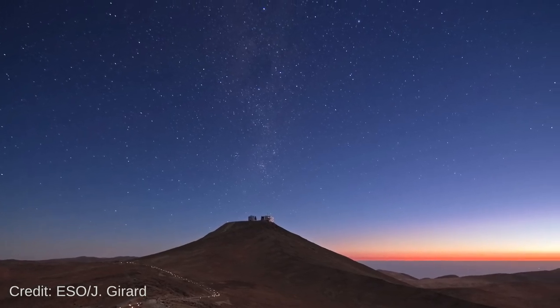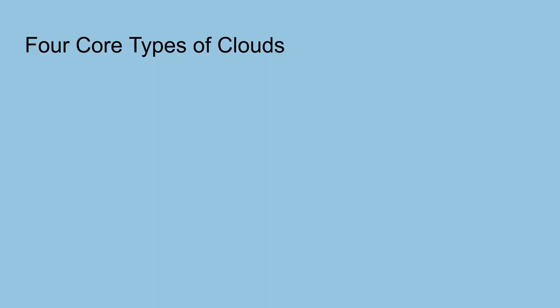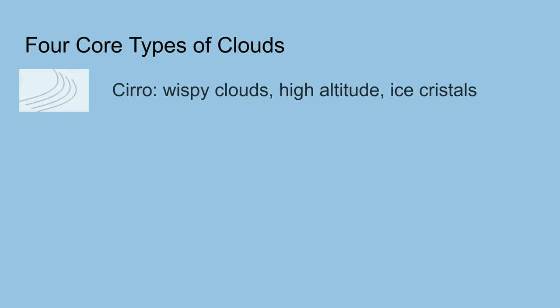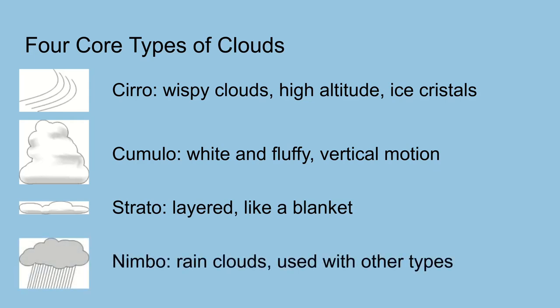Now that we know how clouds are formed, let's look at some of the major cloud types. There are four core types of cloud forms. Cirro means hair in Latin. Cirro clouds are wispy, feather-like clouds. They occur at high altitudes where the temperature is below zero. They consist of ice crystals. Cumulo means to swell. Cumulus clouds are white and fluffy. These clouds have a clear boundary and develop vertically. Strato means layer. These clouds are broad and cover the sky like a blanket. Nimbo means rain in Latin.